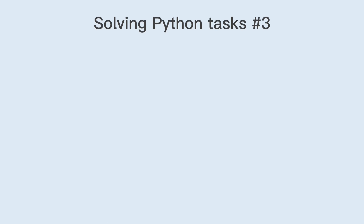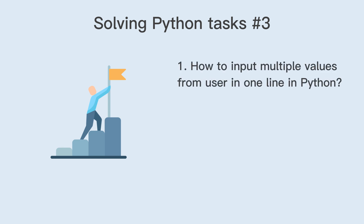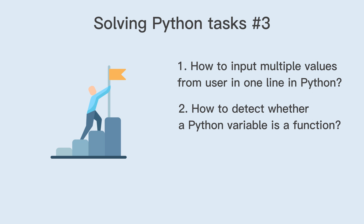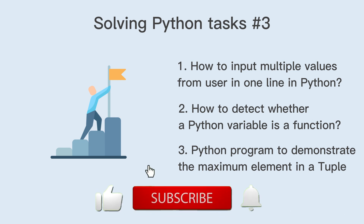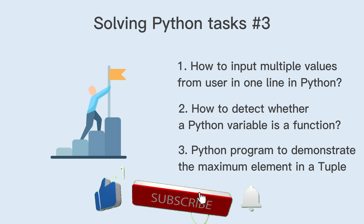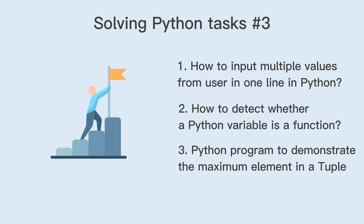Hello everybody. Today we are going to take a glance at three tasks that can be solved in several ways from beginners to advanced. The first one is how to input multiple values from a user in one line in Python. The second is how to detect whether a Python variable is a function. And the third is a Python program to demonstrate the maximum element in a tuple. Before we start, please give a like to this episode so more people can see it. Subscribe and turn on notifications so you don't miss the next episodes. Let's go.